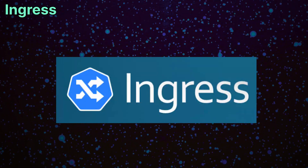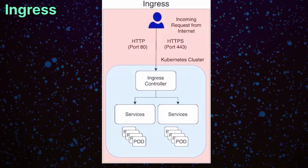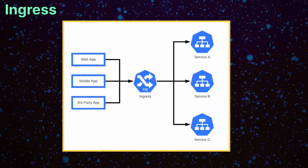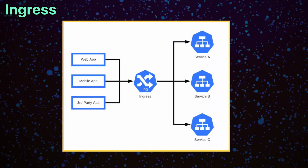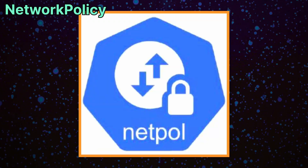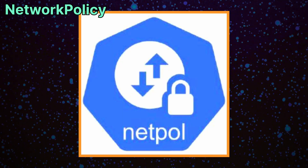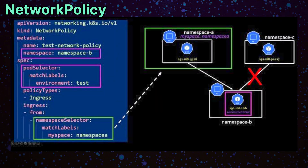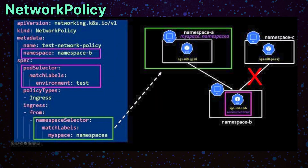Ingress resources manage HTTP and HTTPS traffic, routing requests to services based on host names or paths. Network policies act as a firewall, controlling which pods or namespaces can communicate with each other.